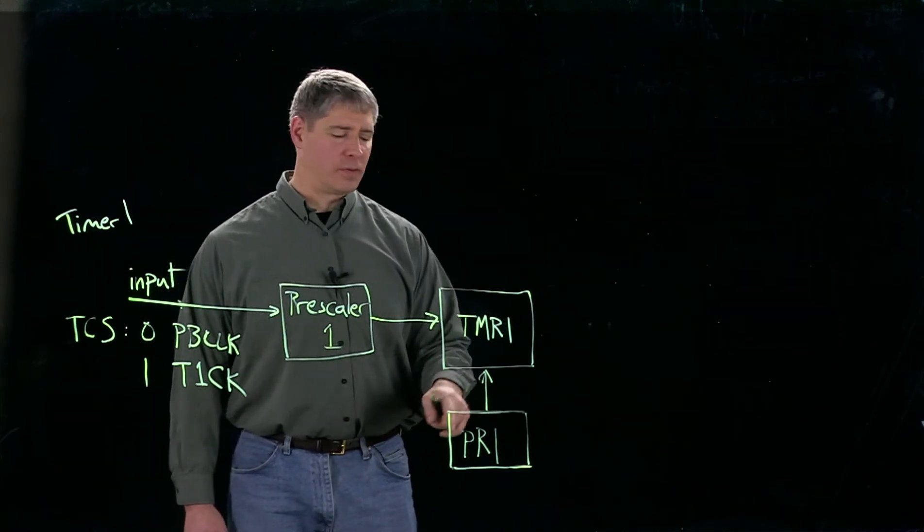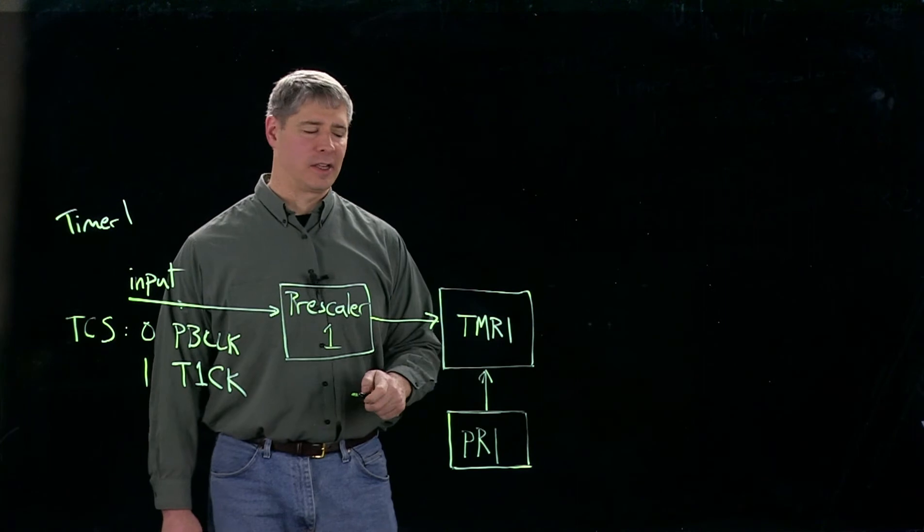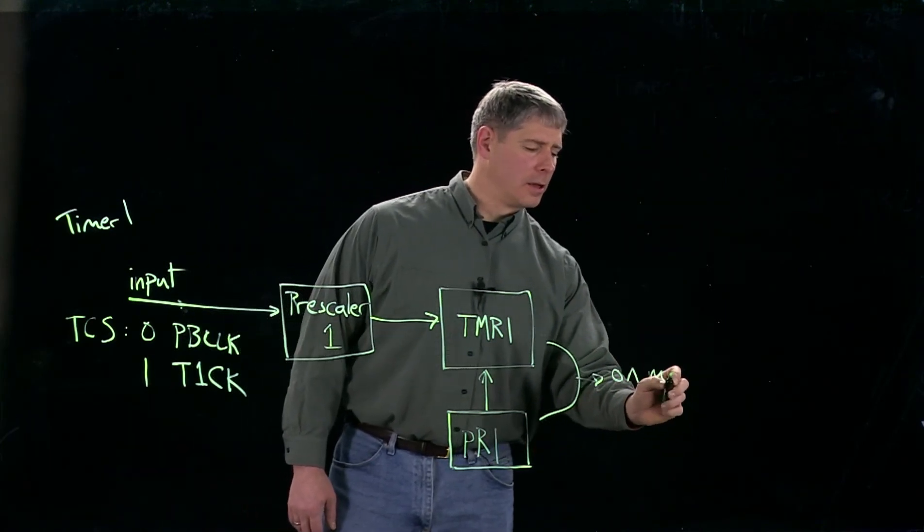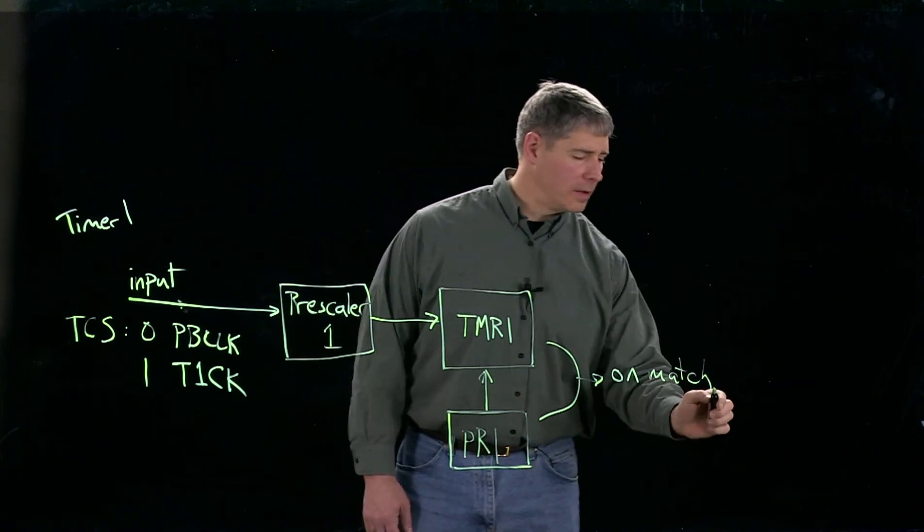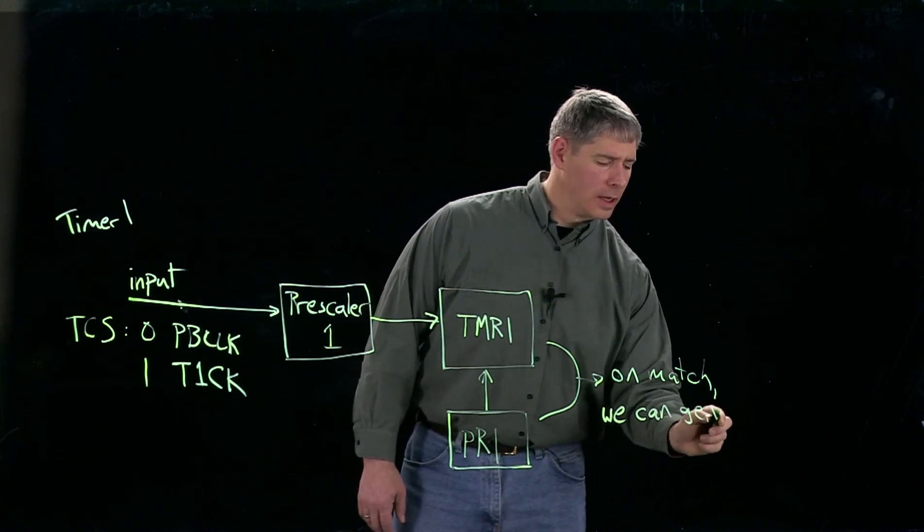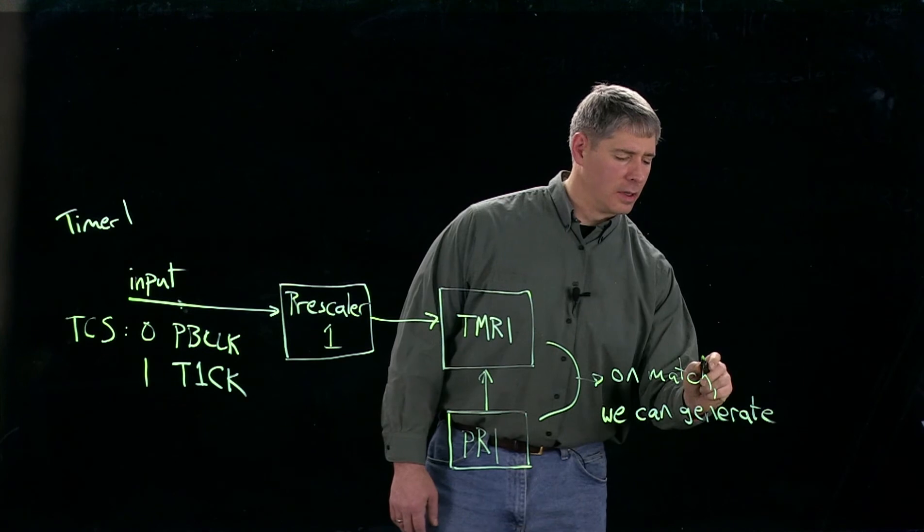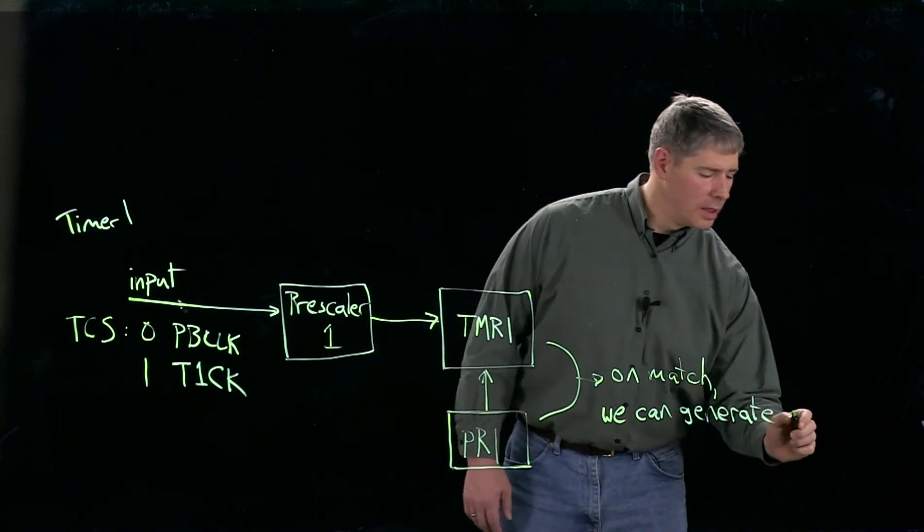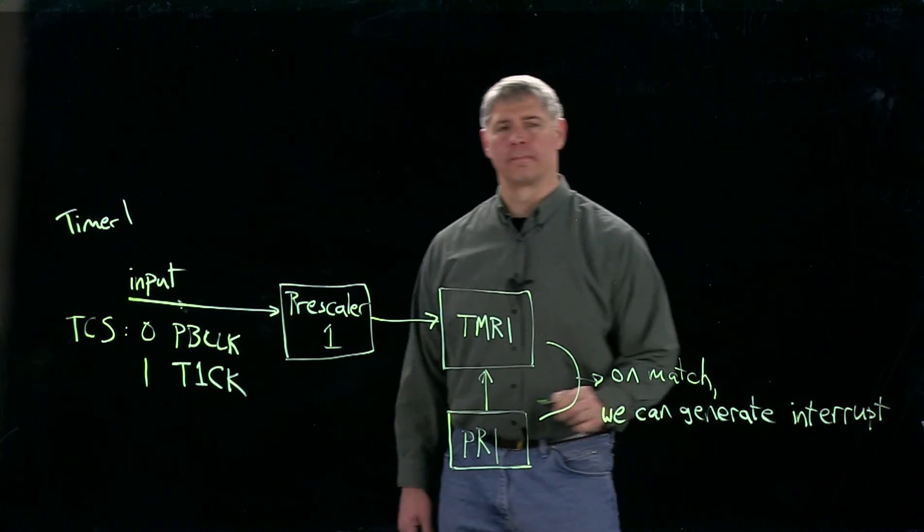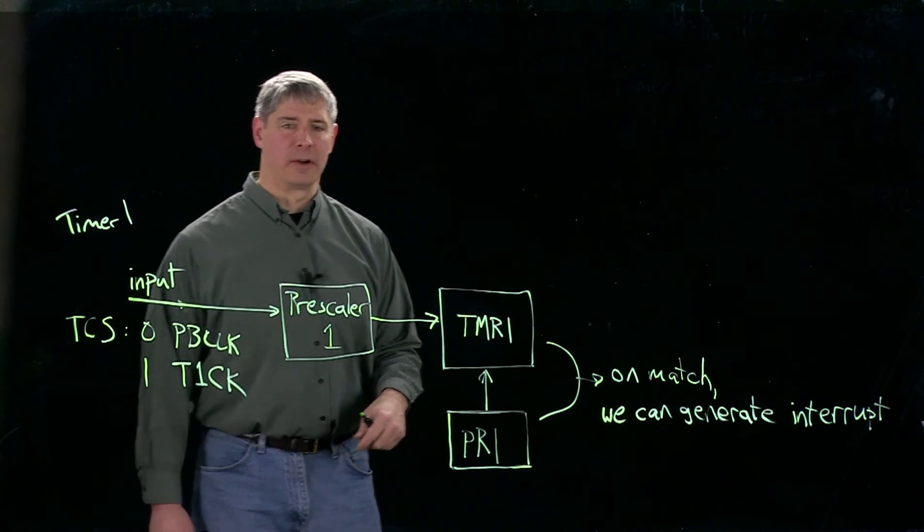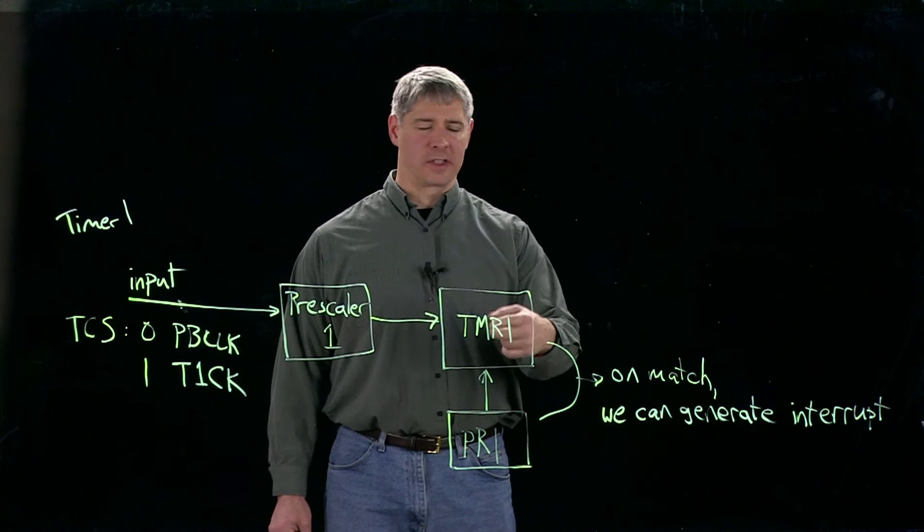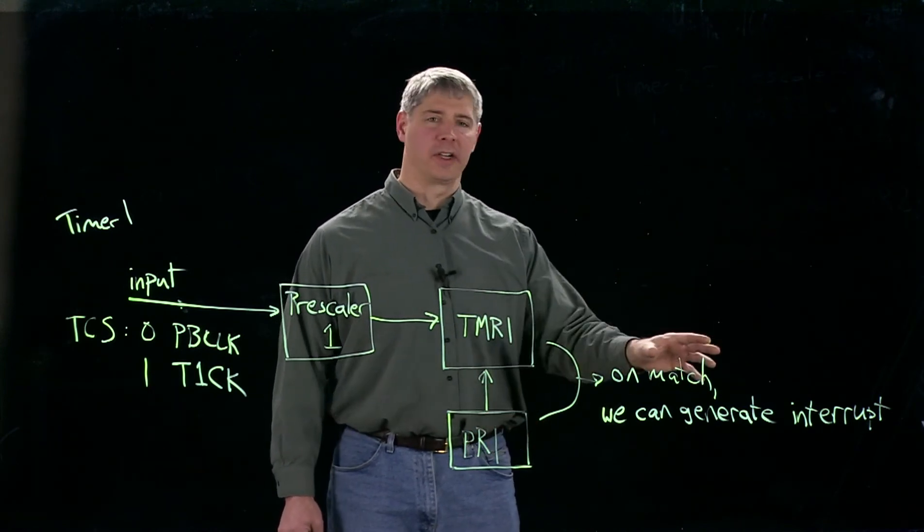Okay, but what happens here now is when the period register matches the count on the timer, so on match, we can generate an interrupt if we want. And this is something we have to decide when we set up the interrupt bits for this particular timer. So we have the option now of every time the timer counts up to the value on the period register to generate an interrupt.